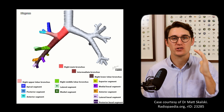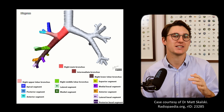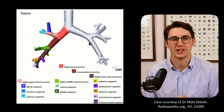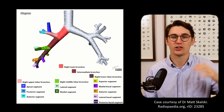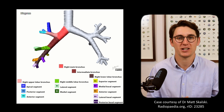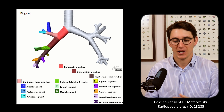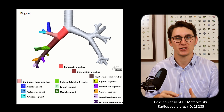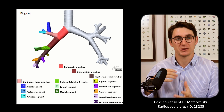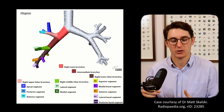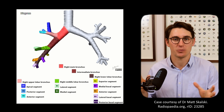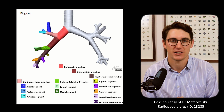A lot of people try to rote learn these segments one by one or memorize a mnemonic, and that's not a good long-term strategy. Those may work for short-term exam studying, but it's much better to understand how they course. Then not only will you be able to name the segments, but you'll also develop a 3D awareness of where those segments sit within the lungs.